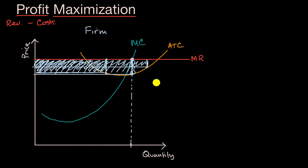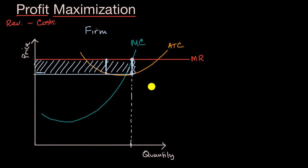Big takeaway: a rational firm trying to maximize its profit will produce the quantity where marginal cost and marginal revenue are equal to each other.